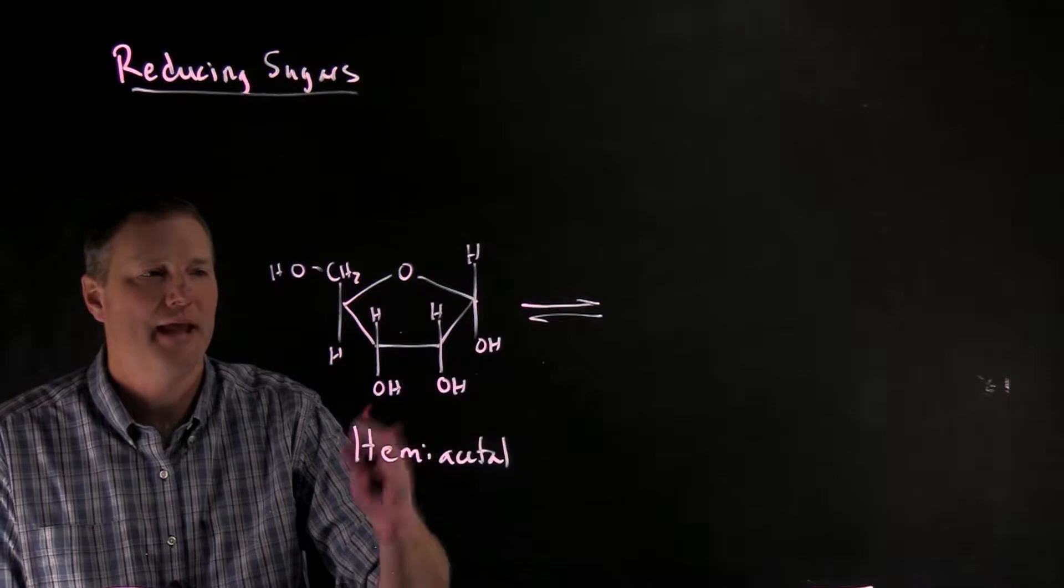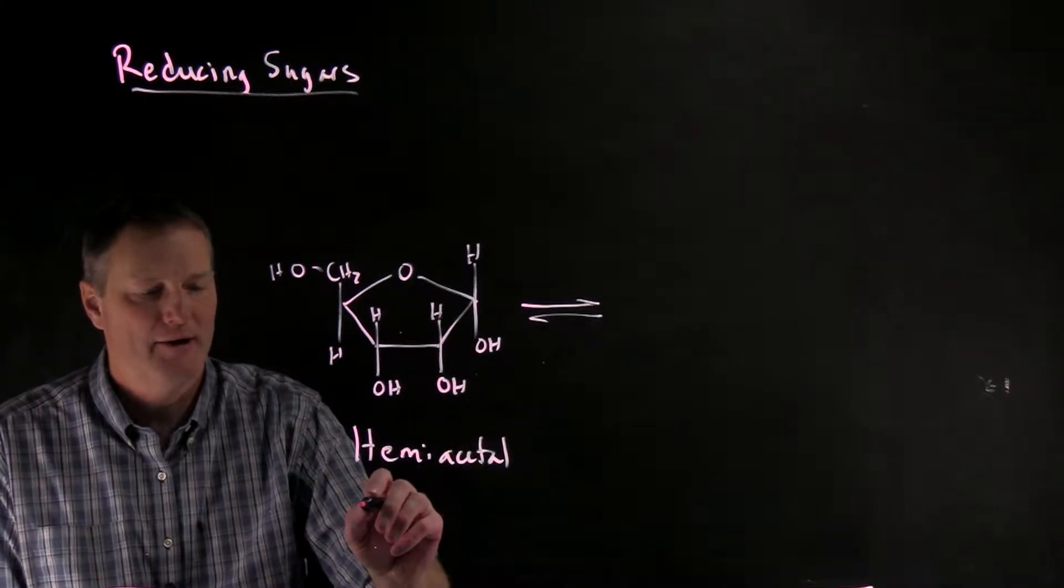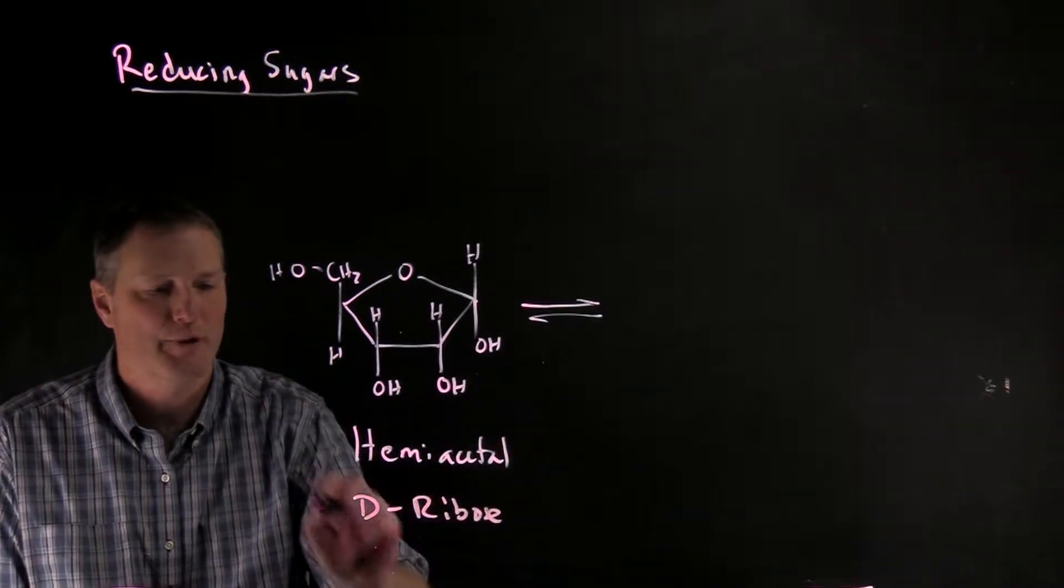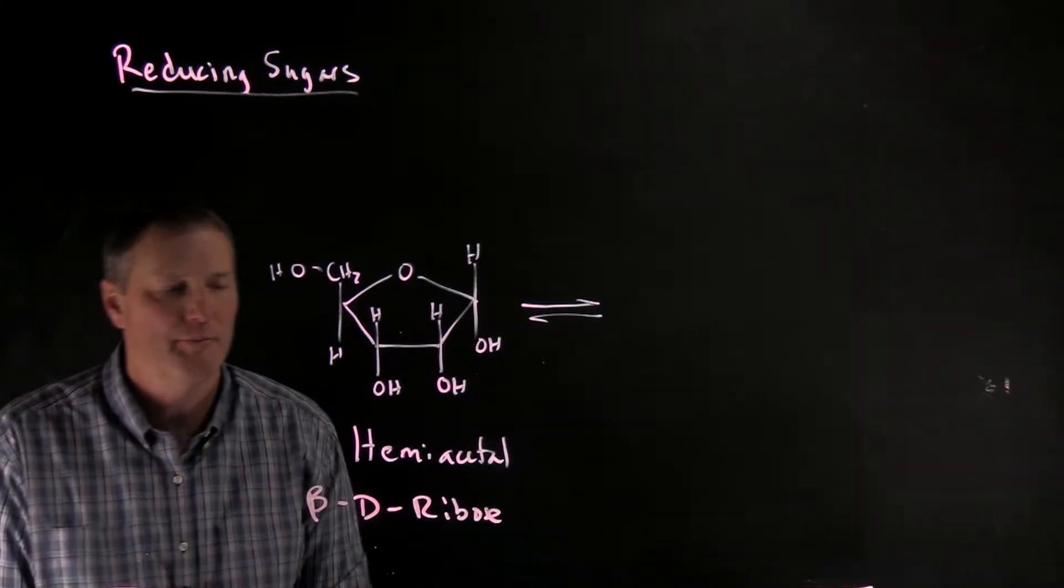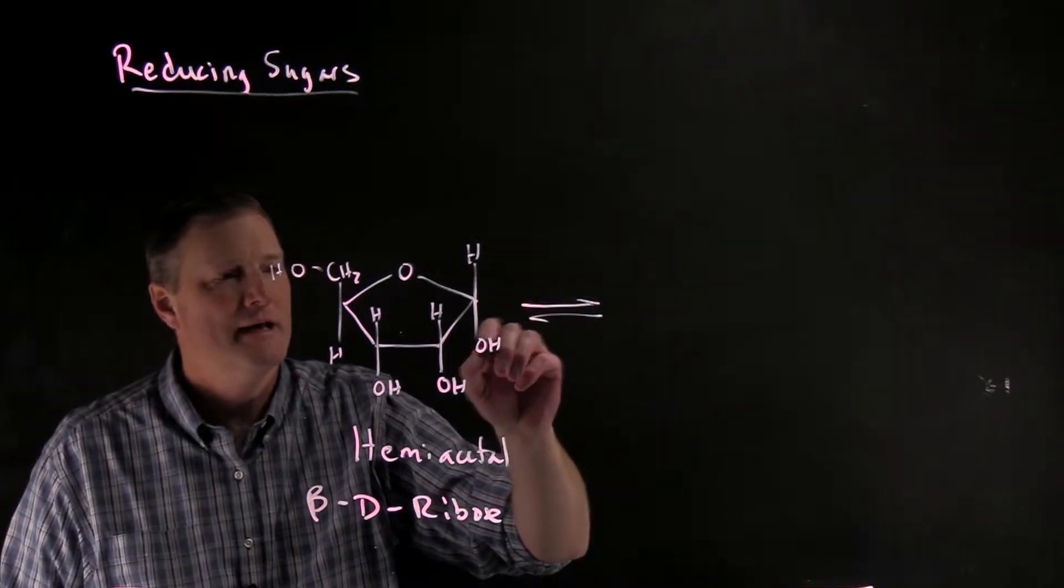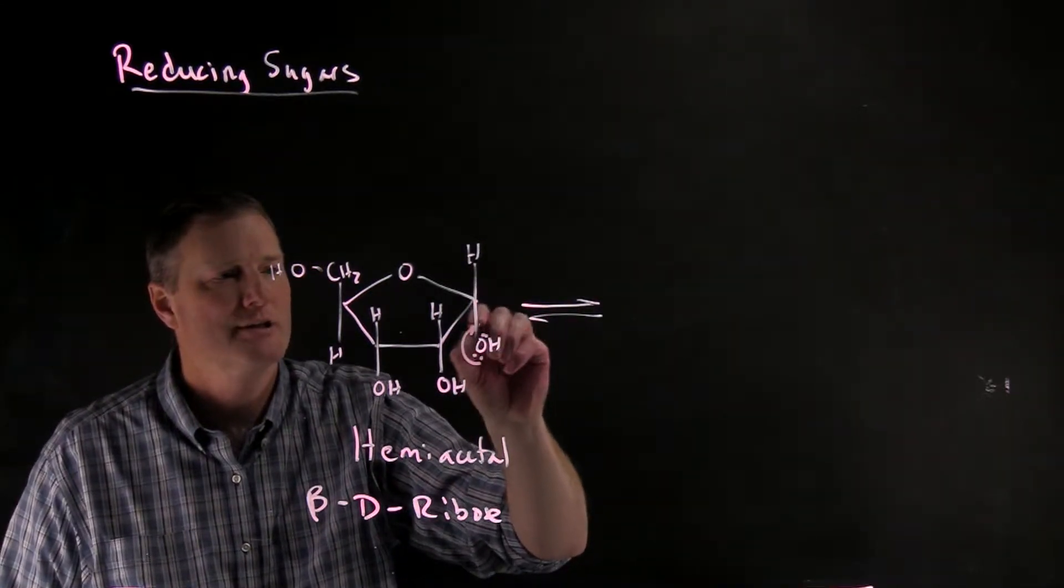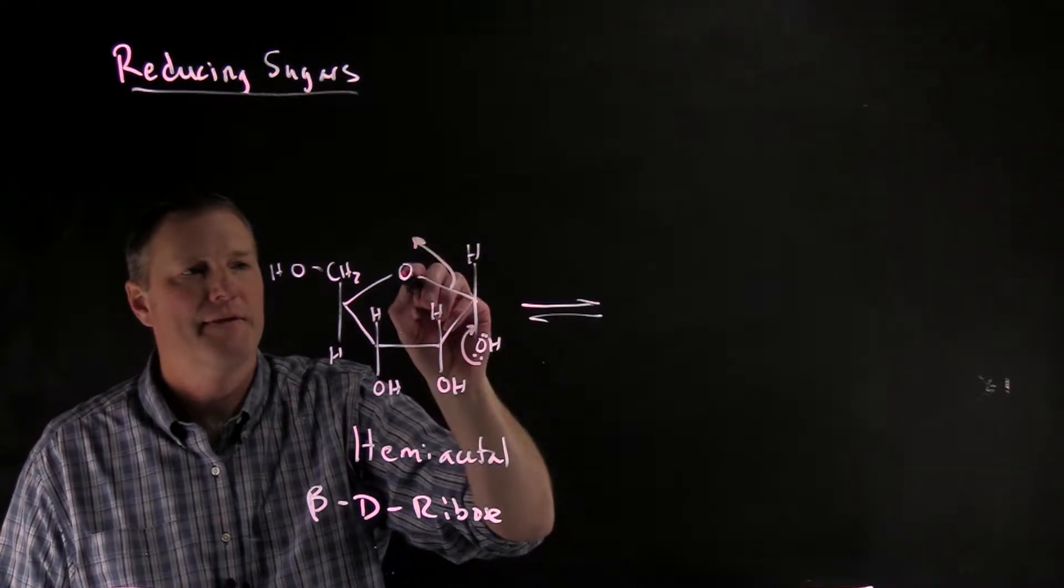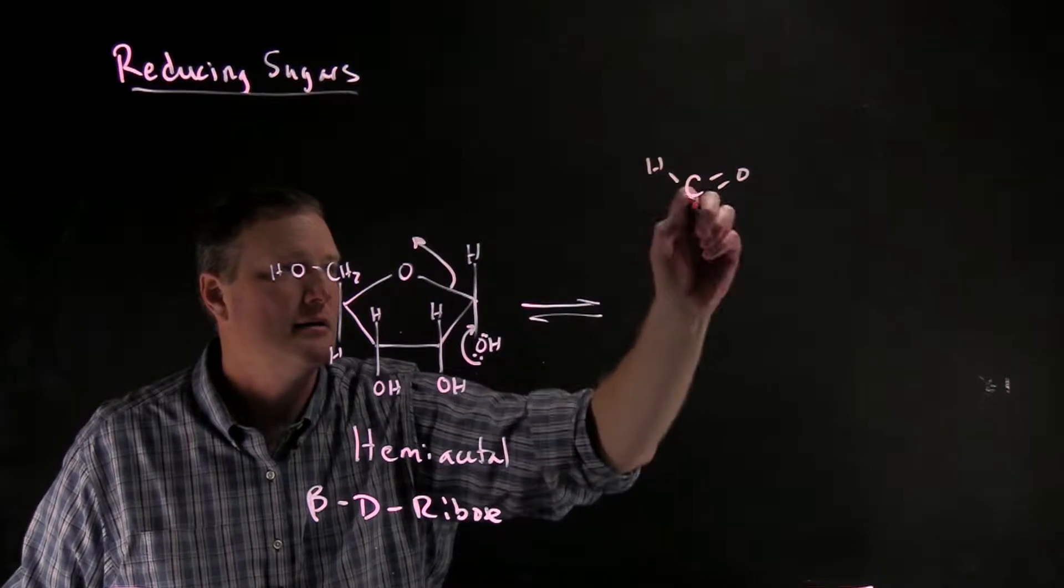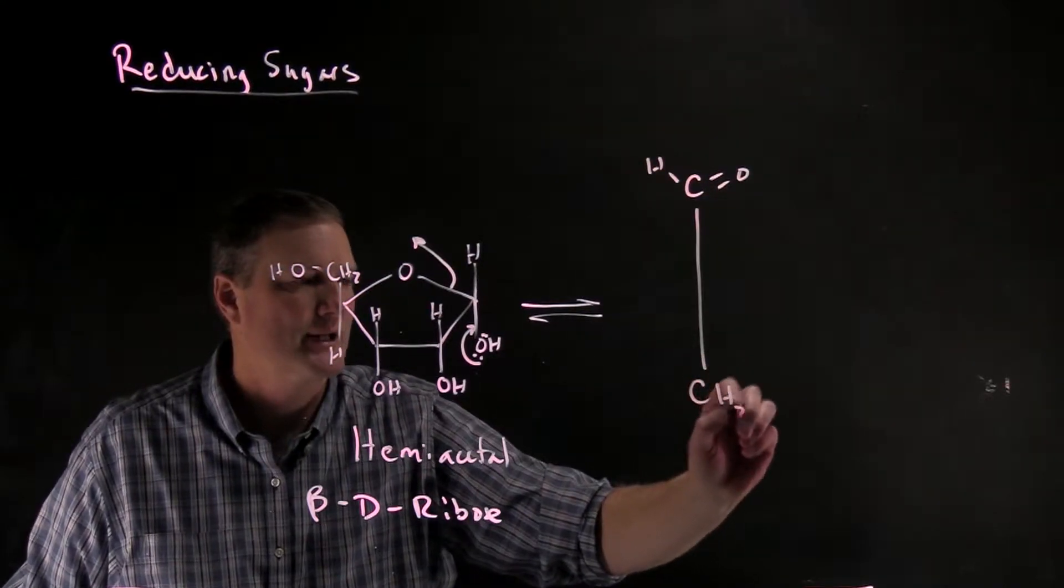So here I've drawn the hemiacetal form of D-ribose, and in fact I drew the beta form, the beta D-ribose. If I were to go ahead and draw the open chain form, this is essentially going to go backwards, and this will now become the OH at carbon 4. So I now have an aldehyde, and the Fischer projection would look like this.